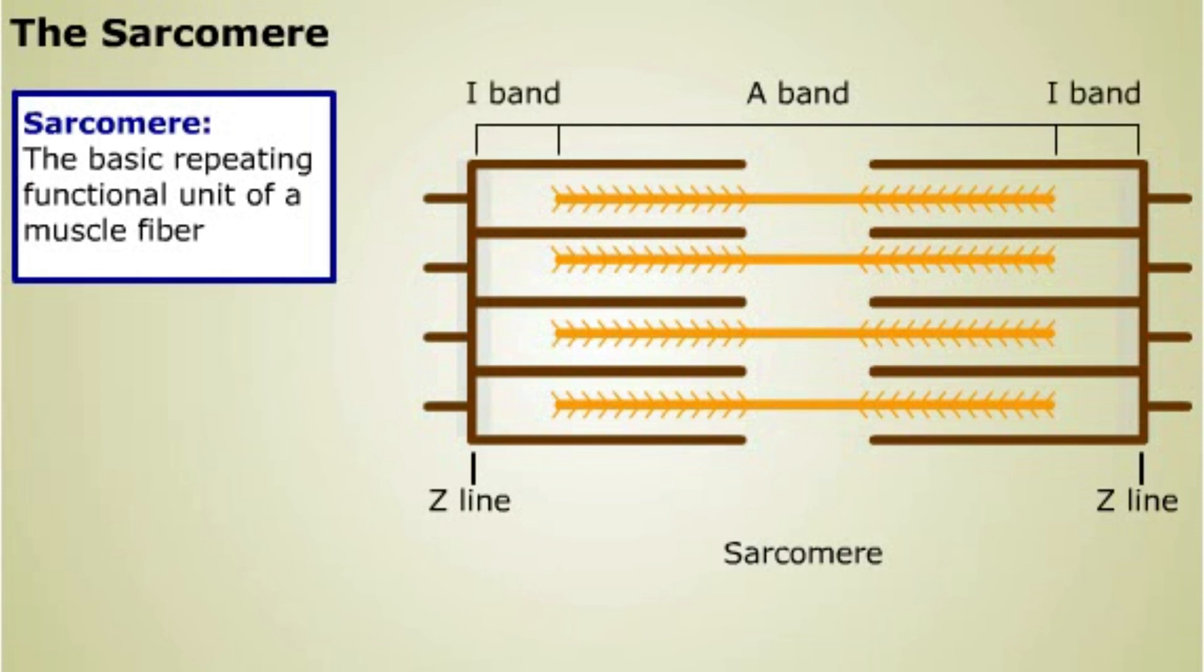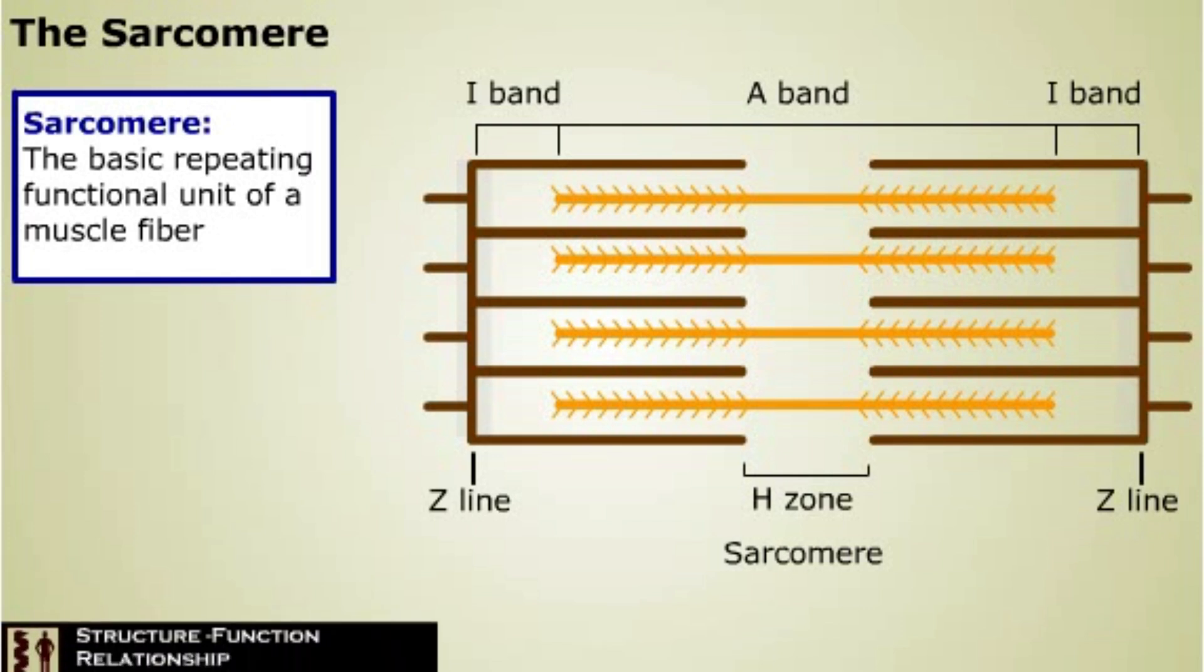The center of the sarcomere, where there is only thick filament, is called the H-zone. We'll see in a moment how the structure of the sarcomere is the key to muscle contraction.